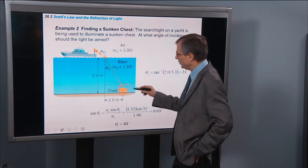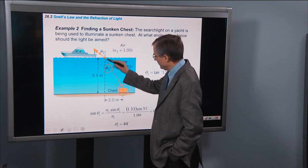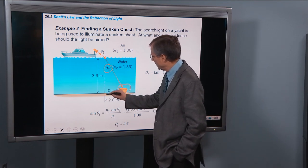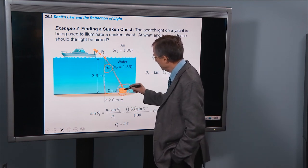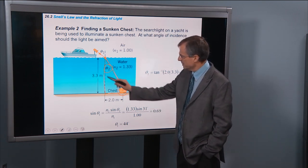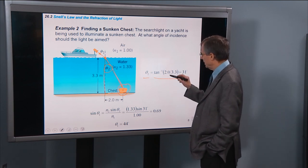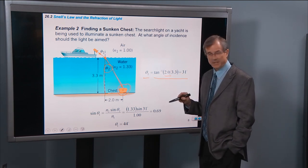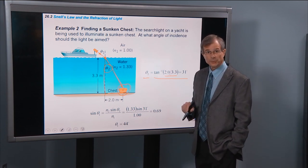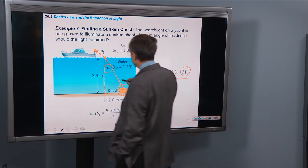Well, we can find θ2 from just the geometry. θ2, we've got a right triangle here. θ2, the tangent of θ2 is the opposite over the adjacent. Therefore the θ2 is the inverse tangent of the side opposite, which is 2 meters, divided by the side adjacent, which is 3.3 meters. And that gives us 31 degrees for θ2.